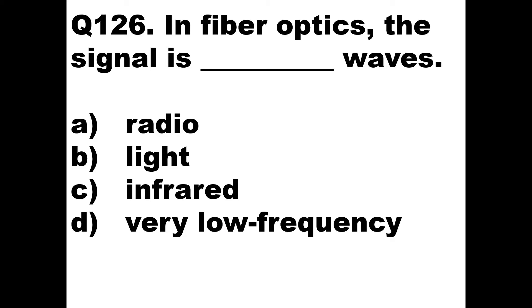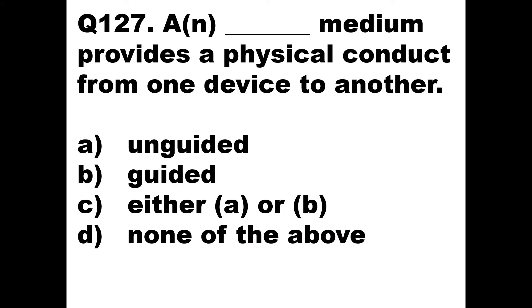Question 126: In fiber optics, the signal is dash waves. We know that in fiber optics the signal is in the form of light which travels, so it is light waves. The answer is option B — light waves.